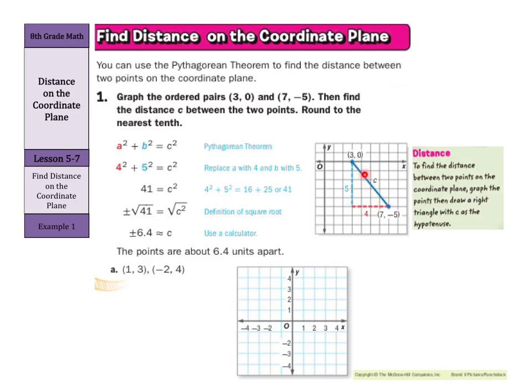And for side a down here, we start here at the corner, and it goes 1, 2, 3, 4. For side b, 1, 2, 3, 4, 5. And 4² + 5² is 41, and the square root of 41 is about 6.4. So 6.4 units apart.